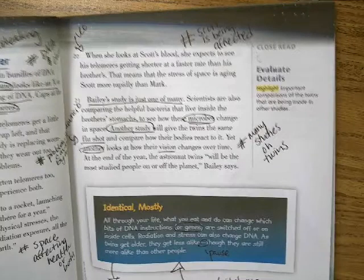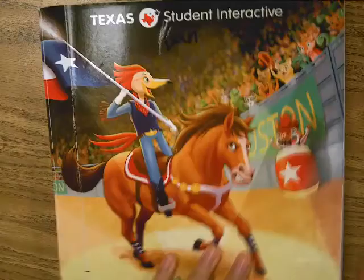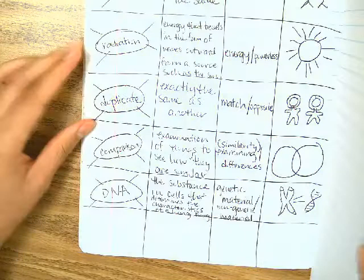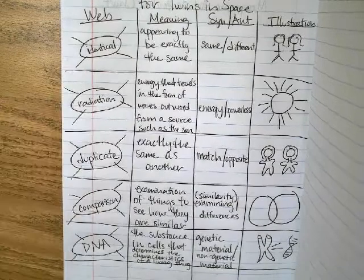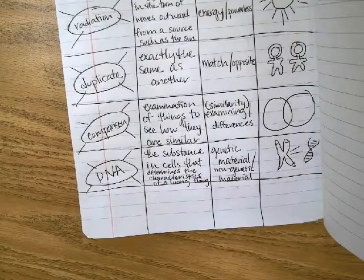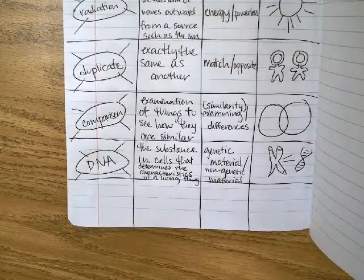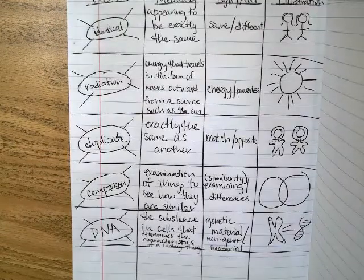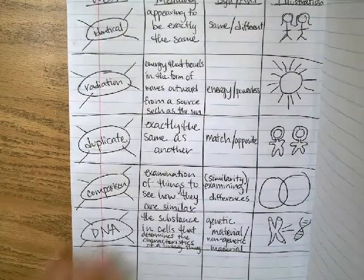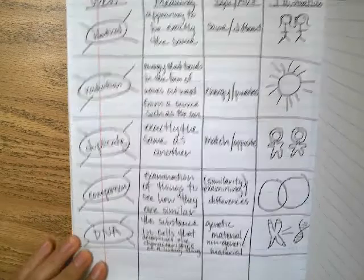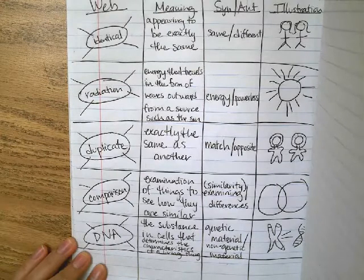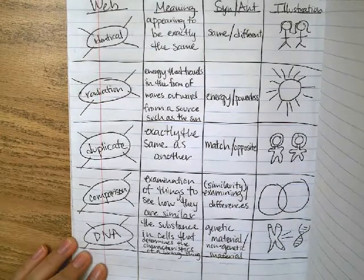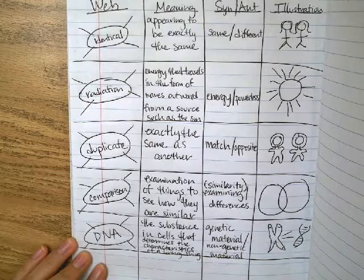We did four of them; we just need one more, and we'll do that tomorrow first thing. These are word webs for Twins in Space: identical, radiation, duplicate, comparison, and DNA.